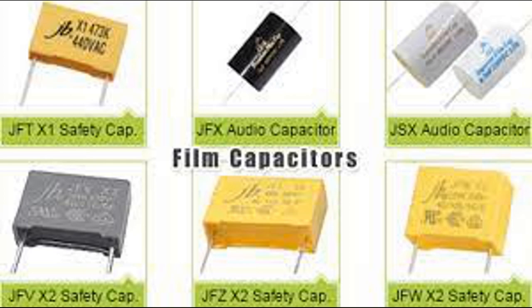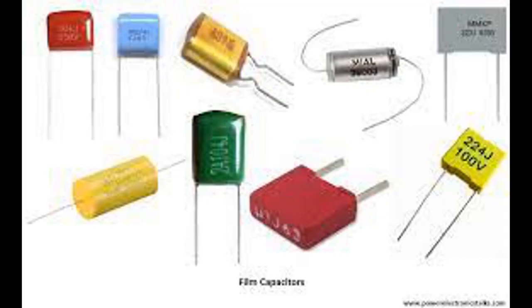Metallized film capacitors are a type of film capacitor where the dielectric material is coated with a thin metal layer, typically aluminum or zinc, to serve as one of the electrodes. They can use various dielectric materials such as polyester (PET), polypropylene (PP), polycarbonate (PC), polyphenylene sulfide (PPS), and polyethylene naphthalate (PEN). The dielectric film is coated with a thin metal layer using a vacuum deposition or sputtering process, which serves as one electrode.